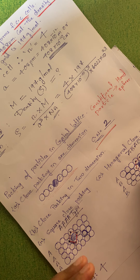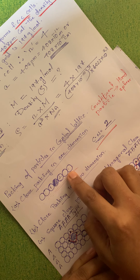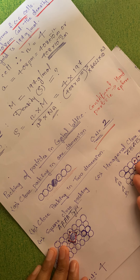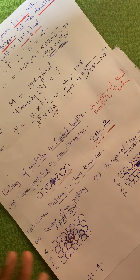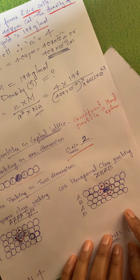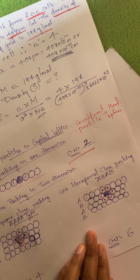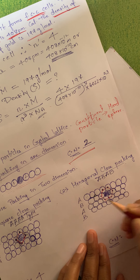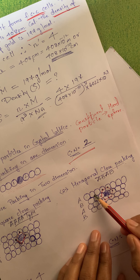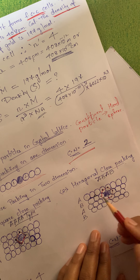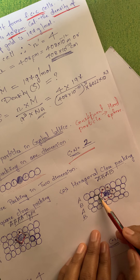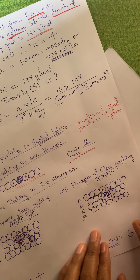When we started with two dimensions we were using one dimension as a basis; similarly when we start with three dimensions we have to take the two-dimensional layer as a basis. One thing I forgot to mention last time: triangular voids are formed of two types — one showing the apex at the top and the other showing the apex at the bottom — so two kinds of triangular voids are formed.